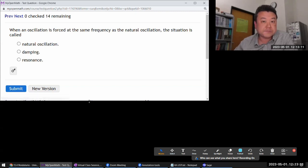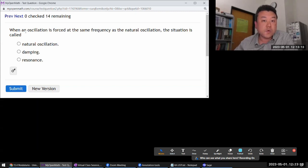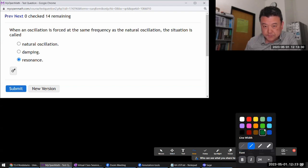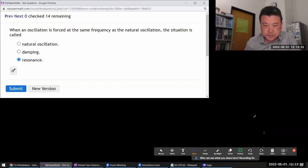It says, when an oscillation is forced at the same frequency as the natural oscillation, the situation is called resonance. So, when we say natural oscillation, that would be like simple harmonic oscillator. In terms of acronyms we use, this would be SHO, simple harmonic oscillation.